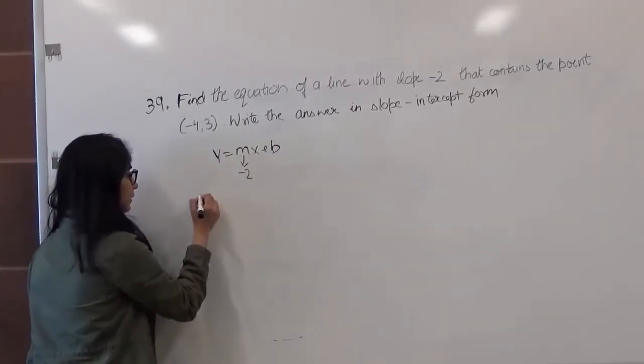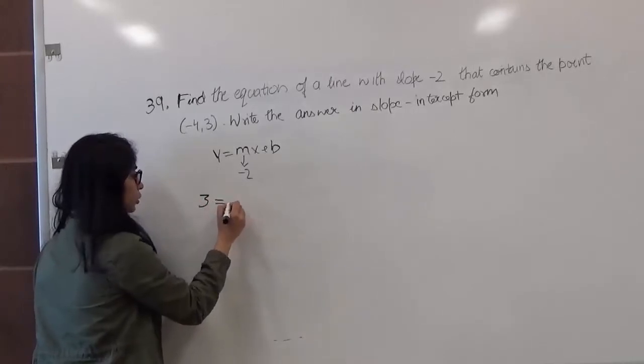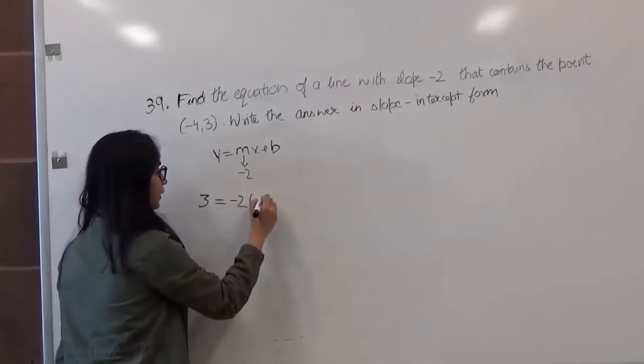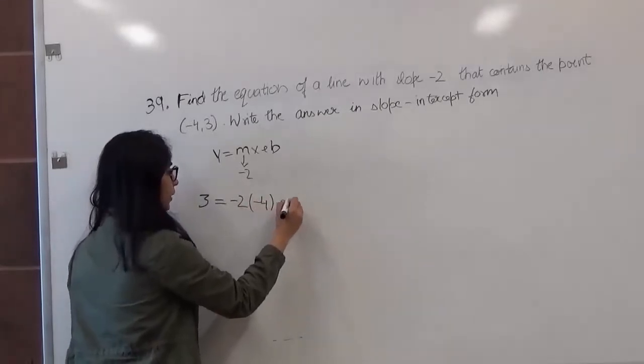So my y is 3, slope is -2, and x is -4 plus b.